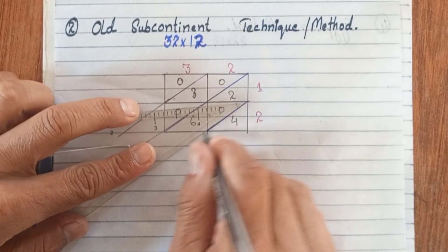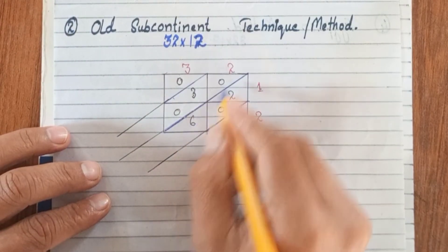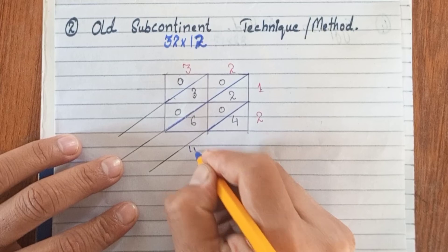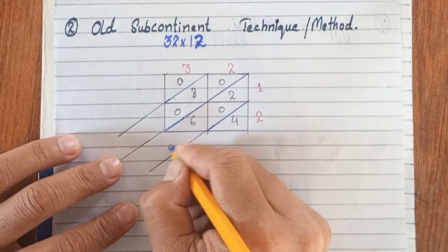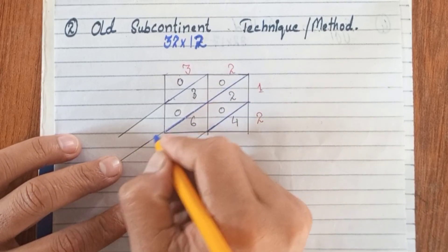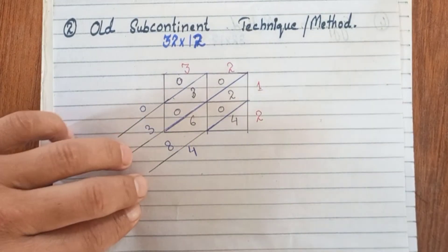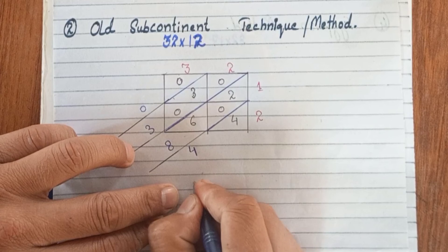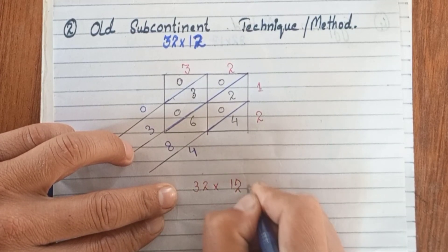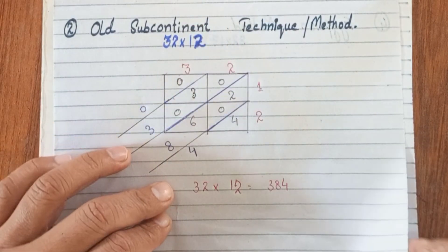At the end, we will make lines in this manner and add all the digits in these boxes. We have 4 here. 2, 0, and 6 give us 8. 3, 0, and 0 give us 3. Here we have 0. So when 32 is multiplied with 12, it gives us 384, the same result as the Chinese method above.